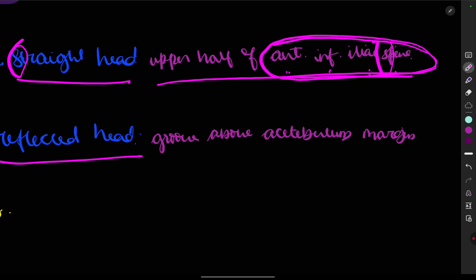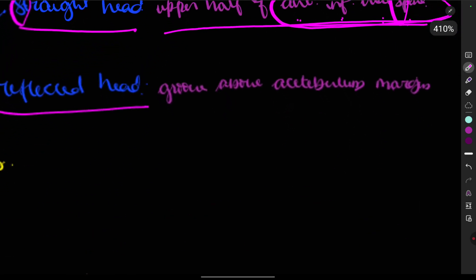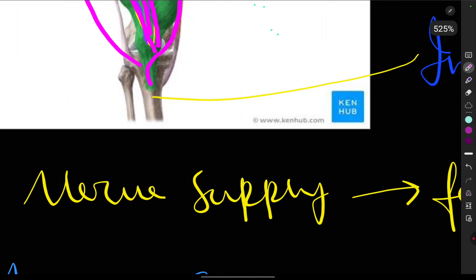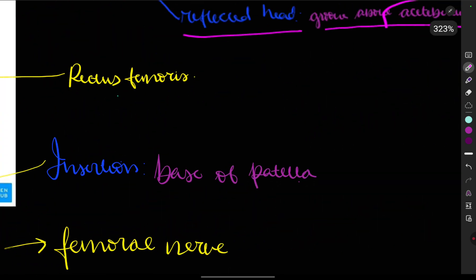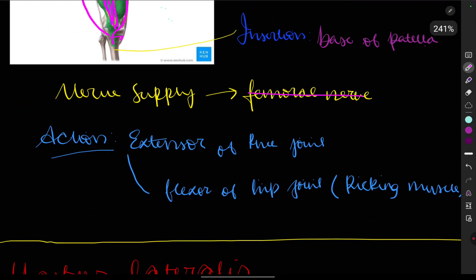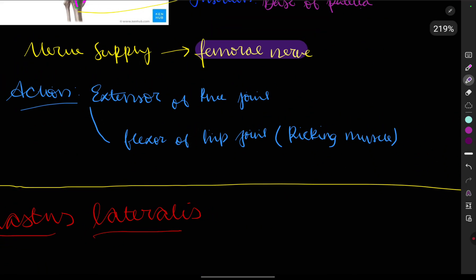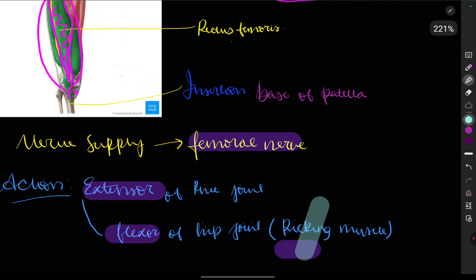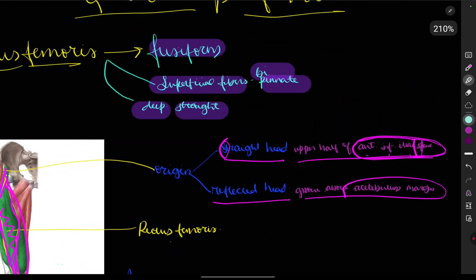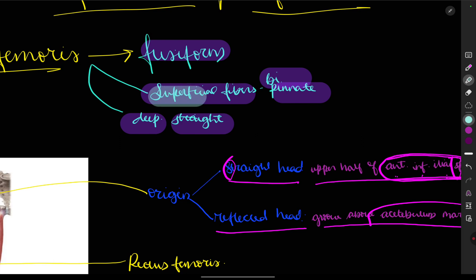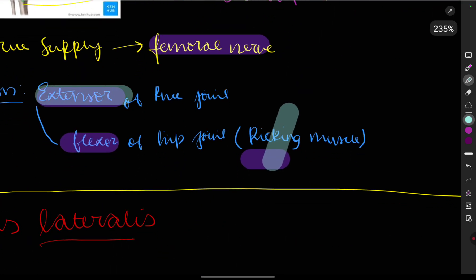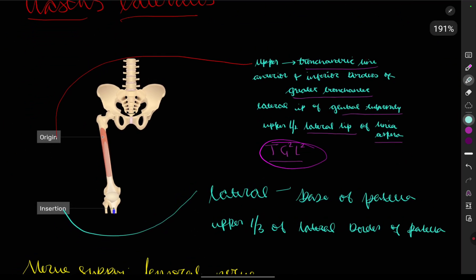The reflected head arises from the groove above the acetabular margin. The insertion is on the base of the patella. Its nerve supply is the femoral nerve and its actions are extension of the knee joint and flexion of the hip joint — it is also known as the kicking muscle. Remember it has two of everything: two fiber types, two origins (straight and reflected heads), and two actions (extensor and flexor).